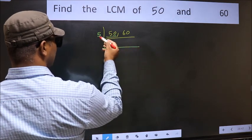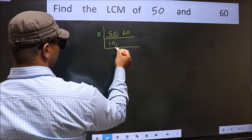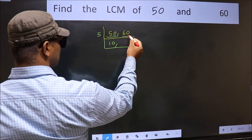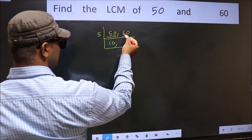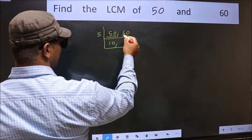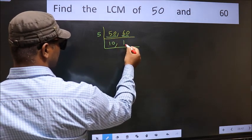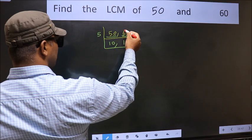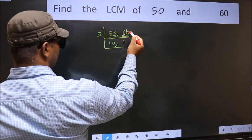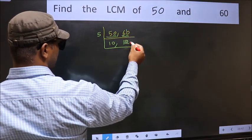When do we get 50 in 5 table? 5 times 10 is 50. Now the other number 60, last digit 0, so this is divisible by 5. First number 6. A number close to 6 in 5 table is 5 once 5. 6 minus 5 is 1, 1 carried forward makes 10. When do we get 10 in 5 table? 5 times 2 is 10.